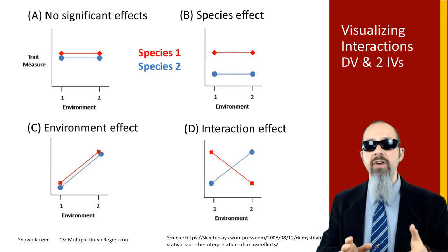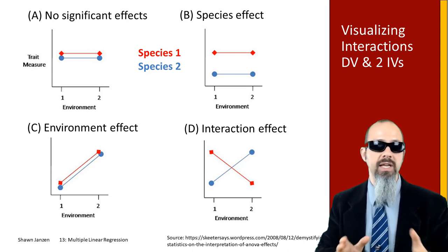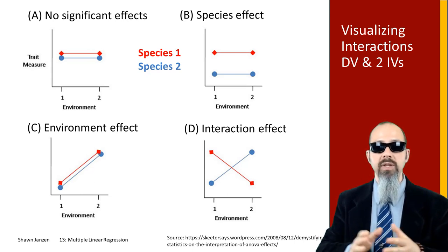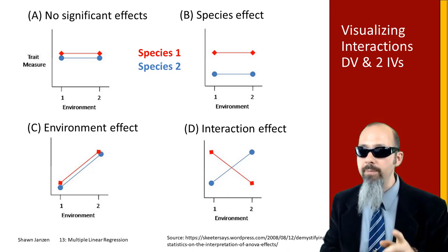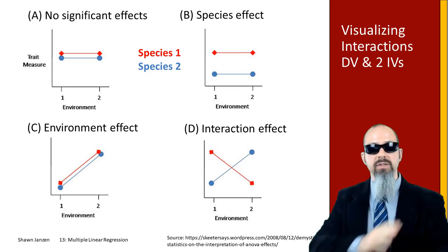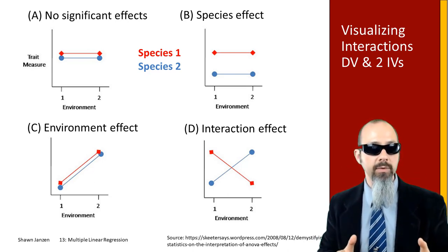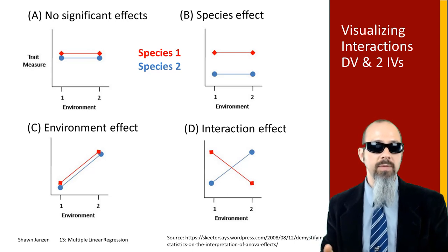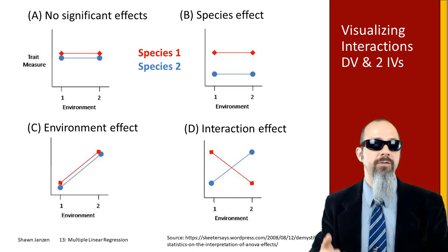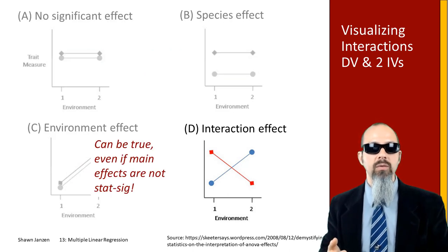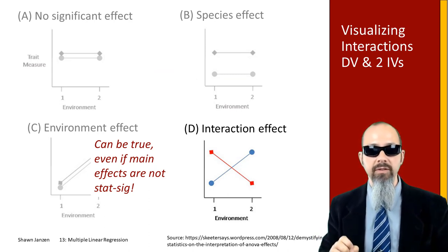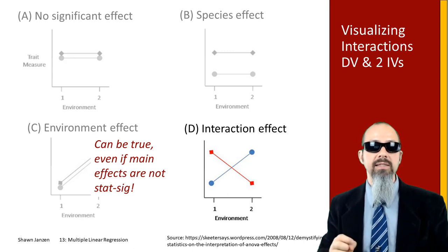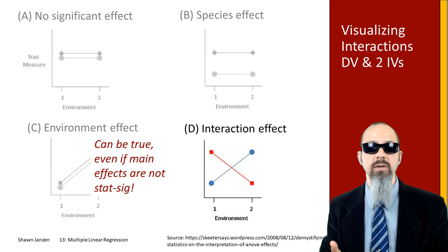In C, we see an environment effect — no real average difference between the species, but a difference between the environments. Again, the lines are parallel, so there's no interaction. In D, we have crossing lines, showing an average difference by both environment and species. There's potential for an interaction effect occurring — some environments may be causing different effects on the species. Notably, even if the main coefficients are not statistically significant, it's still possible for an interaction effect to be statistically significant.